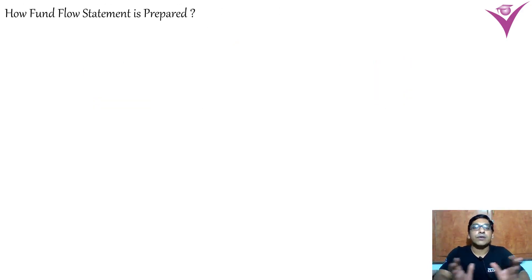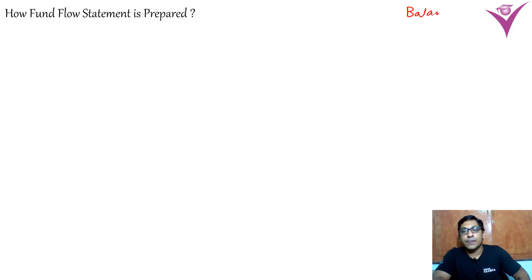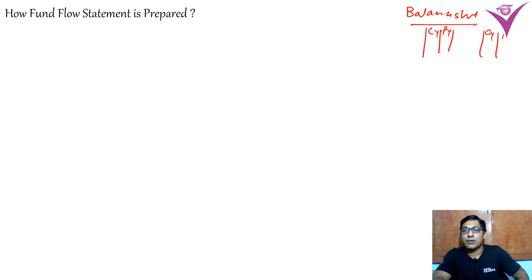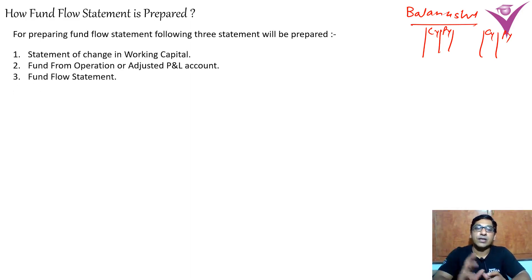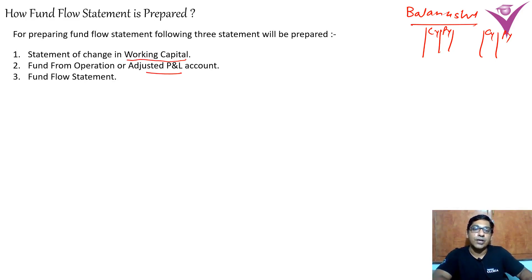Now how is the fund flow statement prepared? In the question you will be given a balance sheet — two years of balance sheet, one for the current year and one for the previous year. Three statements will be prepared: first, the statement of change in working capital; then, fund from operations; and finally, the fund flow statement.